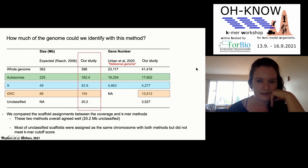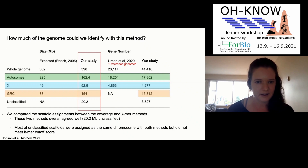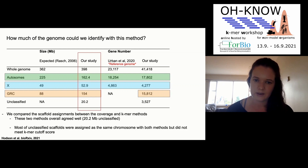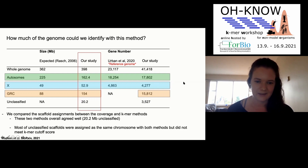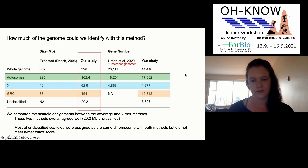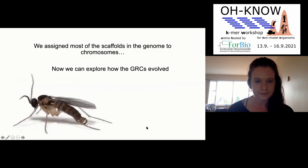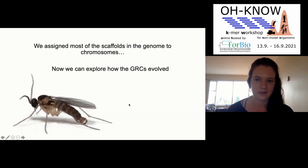Overall, we only identified scaffolds as belonging to one chromosome type if both methods agreed. Through the two methods, we were able to assign most of the genome to either autosomes, X chromosomes, or germline-restricted chromosomes. There was about 20 megabases that we were unable to classify. For most unclassified scaffolds, both methods agreed on the chromosome assignment, but they just didn't meet the k-mer cutoff scores we set, so we weren't confident enough in the classification.